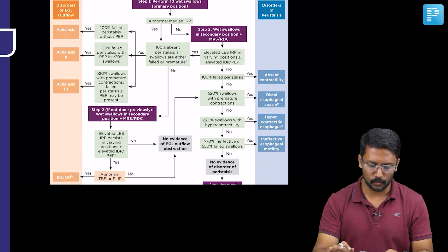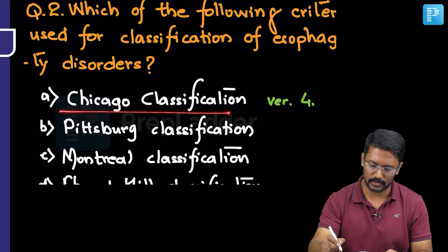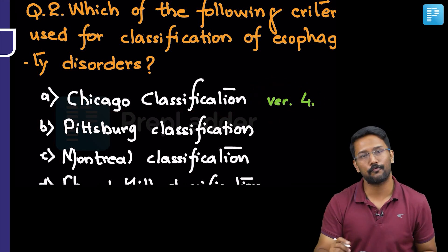With this, now let us move to the next question. The answer is clear. We call it a Chicago classification and we are following the version 4 right now.